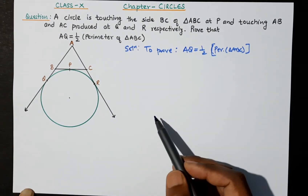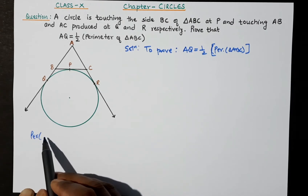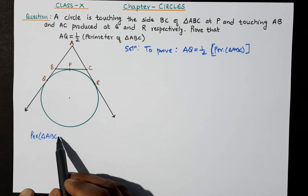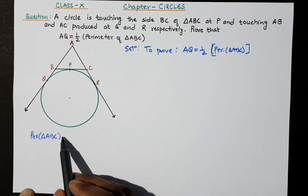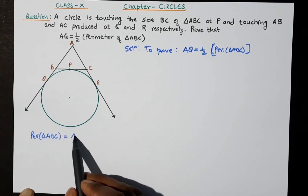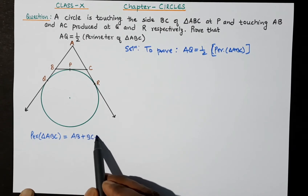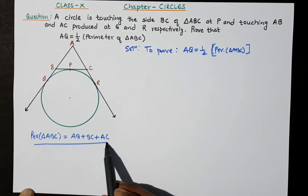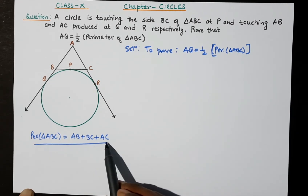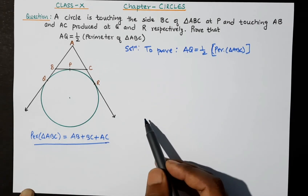We have to prove AQ is equal to half the perimeter of triangle ABC. The perimeter means we have to add all the sides of the triangle. Now let's start the solution.